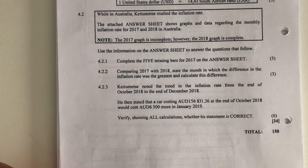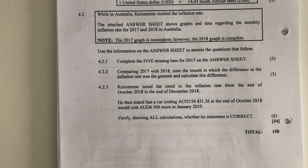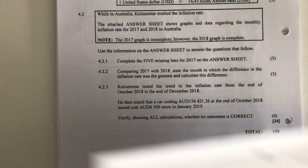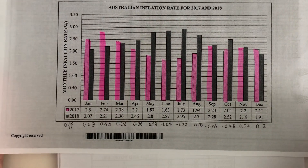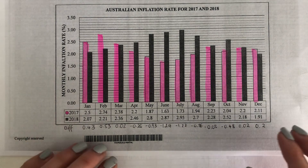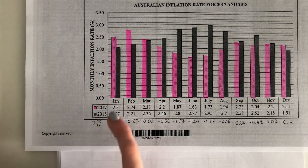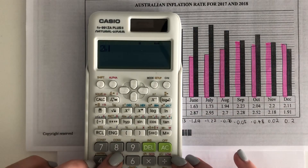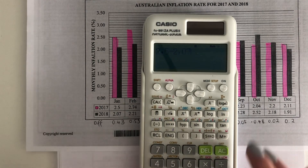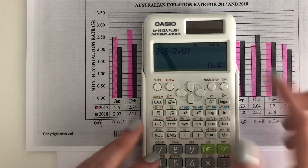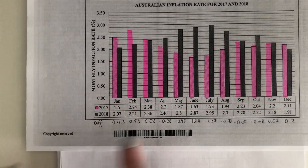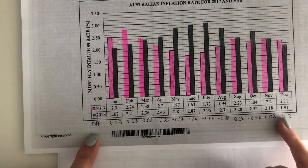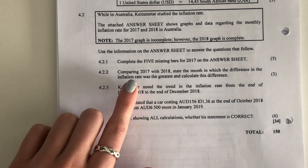The next question says: comparing 2017 with 2018, state the month in which the difference in the inflation rate was the greatest and calculate the difference. What I've done to save time is calculated the 2017 number minus the 2018 number for each month. I've written those differences at the bottom for each month.